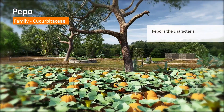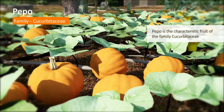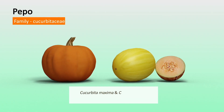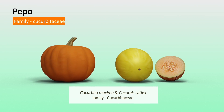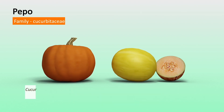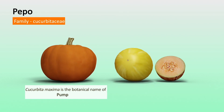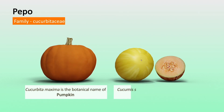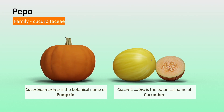Pepo is the characteristic fruit of the family Cucurbitaceae. Cucurbita maxima and Cucumis sativus are members of the family Cucurbitaceae. Cucurbita maxima is the botanical name of pumpkin, and Cucumis sativus is the botanical name of cucumber.